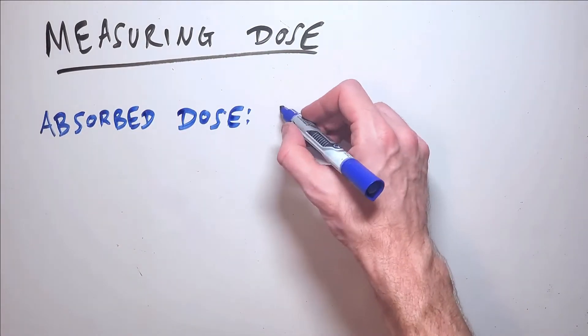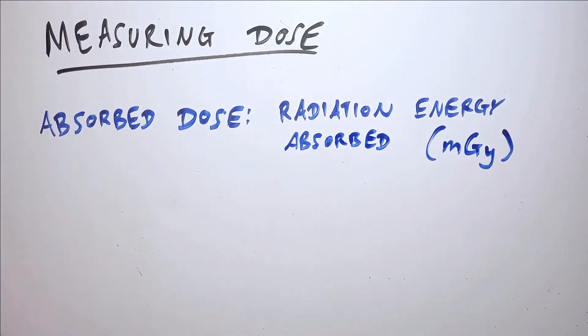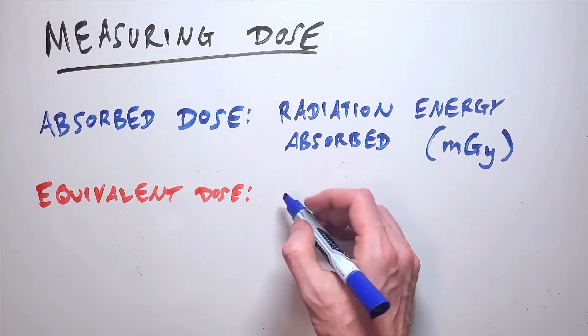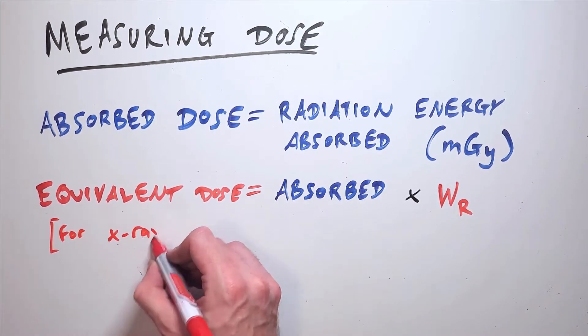Absorbed dose is a description of the absolute amount of radiation absorbed by a patient measured in milligrays. Equivalent dose takes the absorbed dose multiplied by a weighting factor specific to the type of radiation being used. In the case of x-radiation, this weighting factor is conveniently one. Equivalent dose is measured in millisieverts.